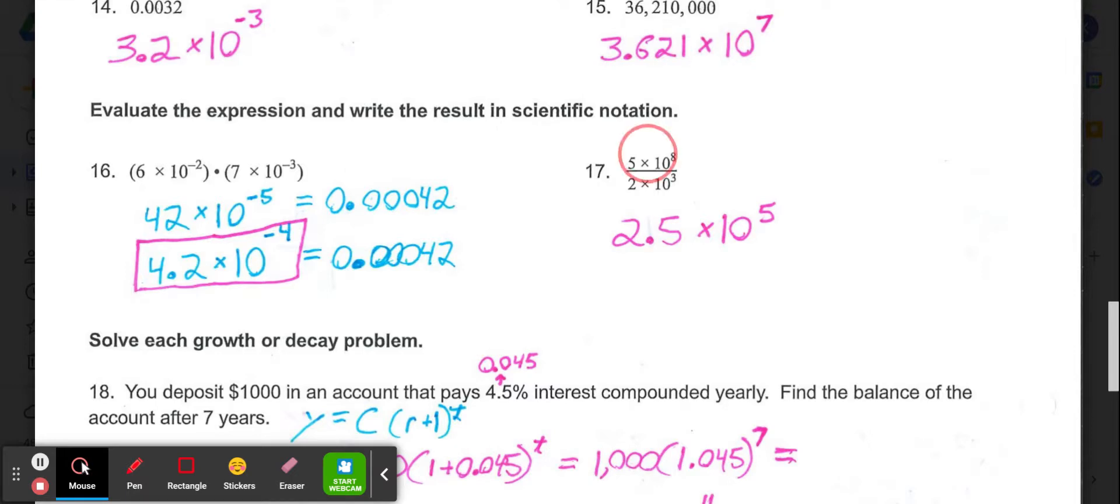Then in 17, we have a division problem. 5 divided by 2 is 2.5. 10 to the 8th divided by 10 to the 3rd would be 10 to the 5th. So this would be 2.5 times 10 to the 5th power.